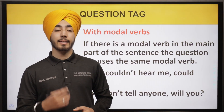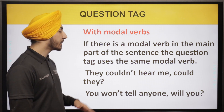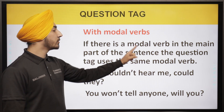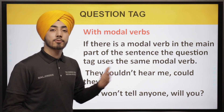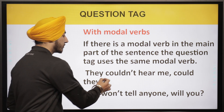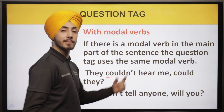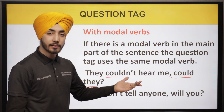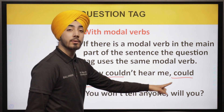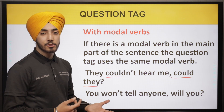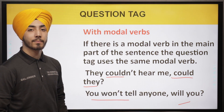In the next category, we have modal verbs — could, should, would. If these are present in our sentence, the question tag should also use the same modal verb. For example: 'They couldn't hear me, could they?' — the sentence uses 'could', so the tag is 'could they'. Another example: 'You won't tell anyone, will you?' — that's a negative sentence so the question tag is the positive 'will you'. This is a kind of reconfirmation to keep the conversation going.